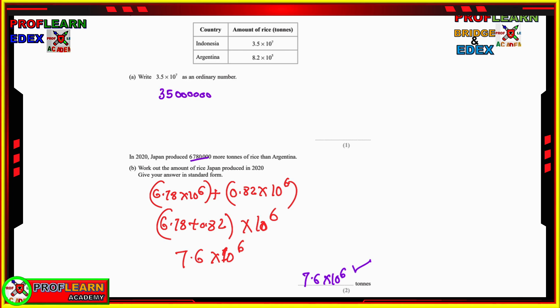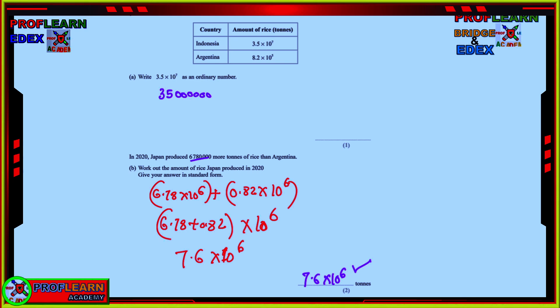So, you need also to know how to work with standard form, numbers in standard form, expressing ordinary numbers to standard form, or expressing numbers in standard form to ordinary numbers. So, you can see we are having 3.5 times 10 to the power 7. So, meaning this is 3.5 times 1 and 7 zeros. But 1 zero will be cancelled by this decimal point here. We end up having 35 million.